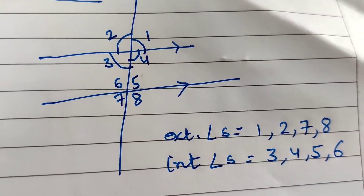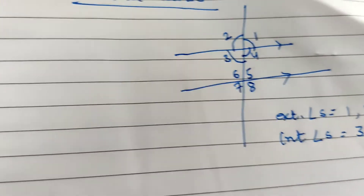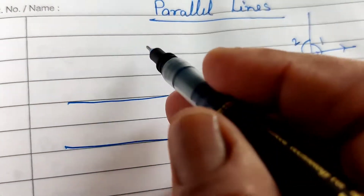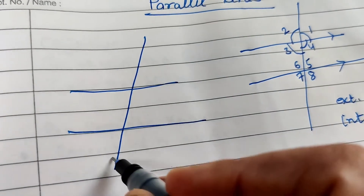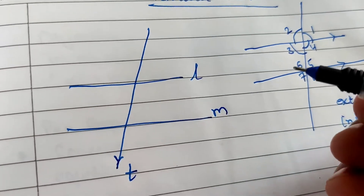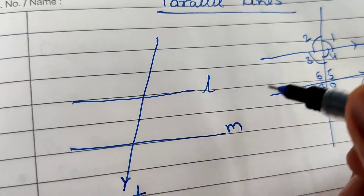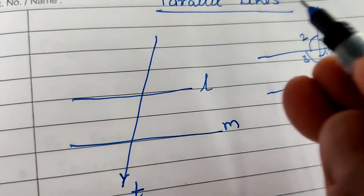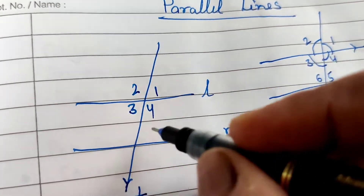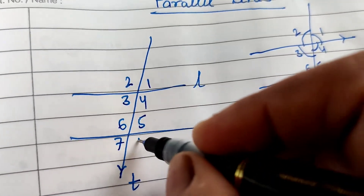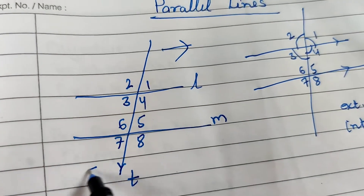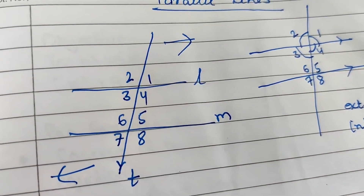When there are two parallel lines with a transversal crossing them, we need to identify alternate angles. Alternate means the angles are on opposite sides of the transversal. They can be either interior or exterior alternate angles.